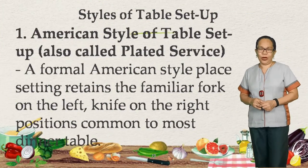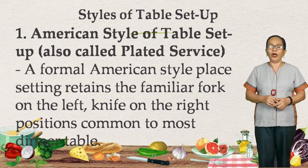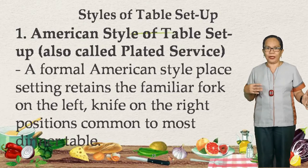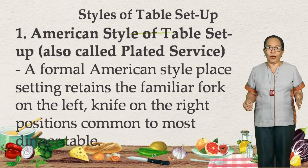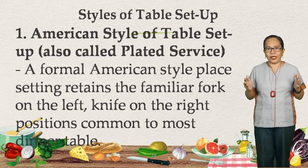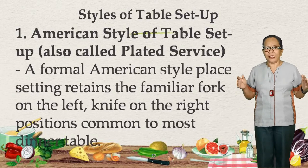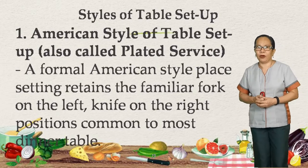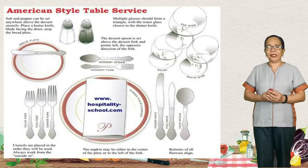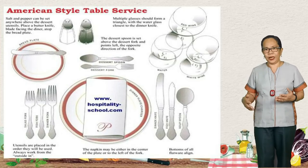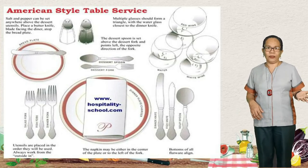Style of table setup. The first one is the American style, also called plated service. The American style is considered a formal place setting in which it retains the familiar fork on the left and knife on the right positions, common to most dinner tables. If you see a setup in a particular restaurant or hotel where the fork is placed on the left side and the knife is on the right side, that is what we call the American style of table setup.